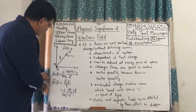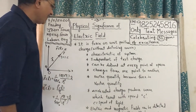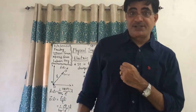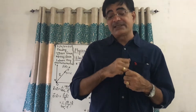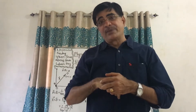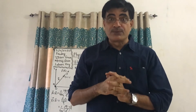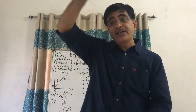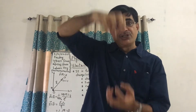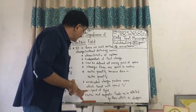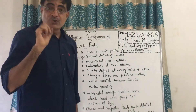Electric field is a vector quantity, obviously, because force is a vector quantity. Here we have considered a static charge. But if a charge has accelerated motion — which we will learn in electromagnetics and electromagnetic waves, for example in Hertz's experiment — then the charges will produce waves, and those waves will propagate with the speed of light, that is C, because they are electromagnetic waves, and light is also one type of electromagnetic wave.